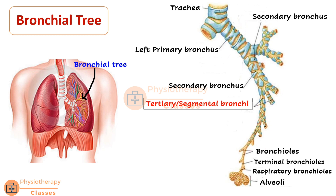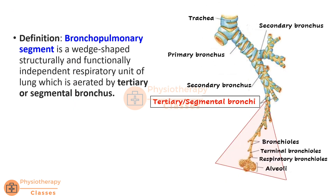Now let us look at the bronchopulmonary segment. A bronchopulmonary segment is a wedge-shaped or pyramidal-shaped area of lung which is aerated by a tertiary or segmental bronchus and its further subdivisions. As shown in the diagram, one segmental bronchus and its subdivisions into smaller bronchi, then bronchioles, alveolar sacs, and alveoli — all of these together constitute one bronchopulmonary segment.